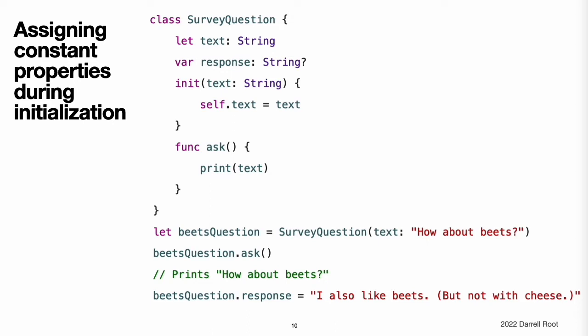Note: for class instances, a constant property can be modified during initialization only by the class that introduces it. It cannot be modified by a subclass. You can revise the SurveyQuestion example to use a constant property rather than a variable property for the text property of the question to indicate that the question does not change once an instance of SurveyQuestion is created. Even though the text property is now a constant, it can still be set within the class's initializer.